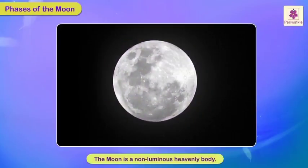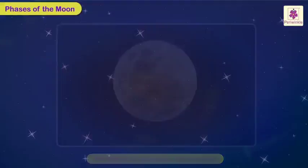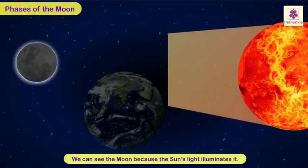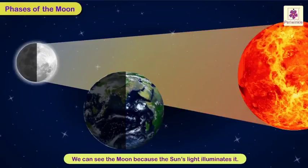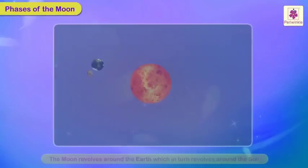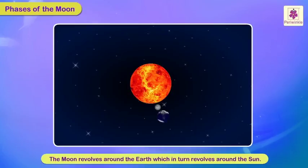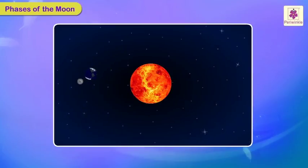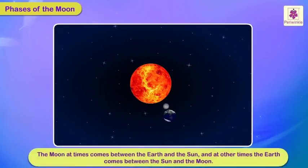Phases of the Moon. The Moon is a non-luminous heavenly body. We can see the Moon because the Sun's light illuminates it. The Moon revolves around the Earth, which in turn revolves around the Sun. As a result, the Moon at times comes between the Earth and the Sun, while at other times the Earth comes between the Sun and the Moon.